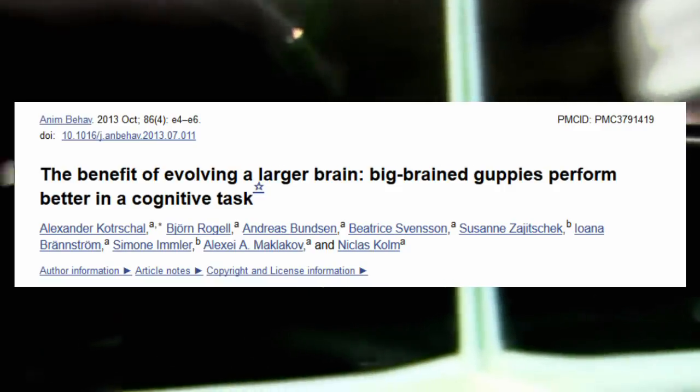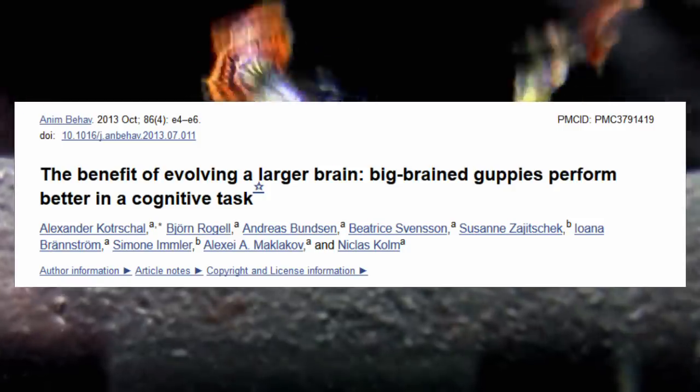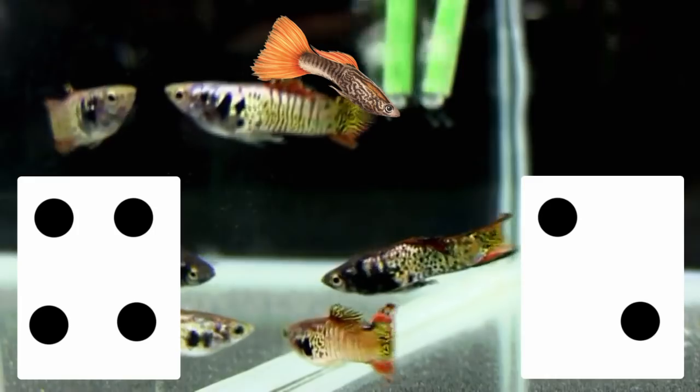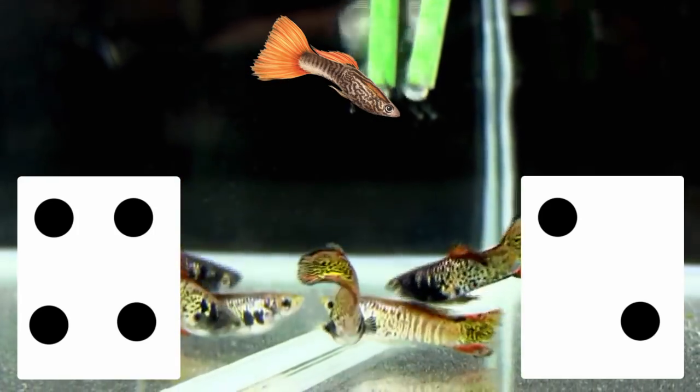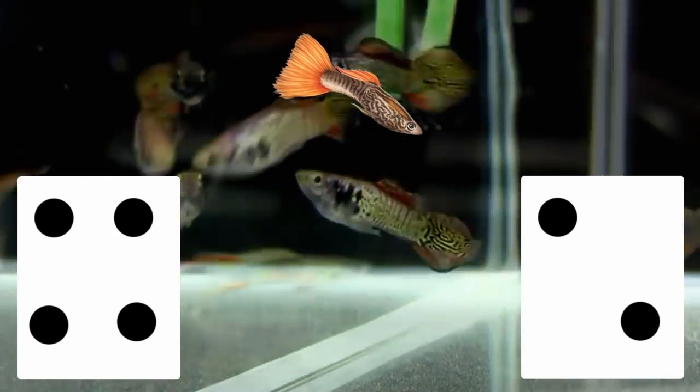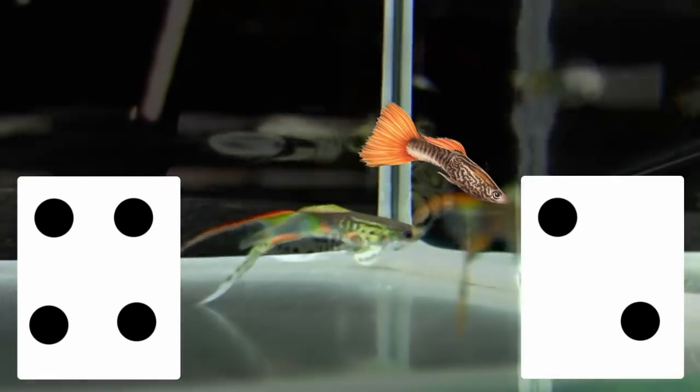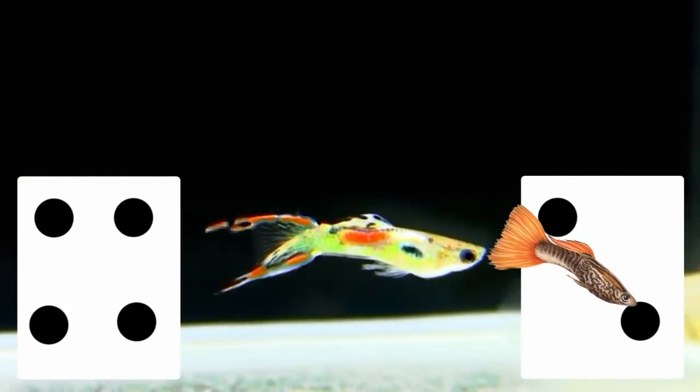The first study which we're going to be looking at was basically a very simple cognitive test. A card with either two symbols or four symbols was shown to the fish on one side of their tank. One of these was associated with a food reward and the other not. Rather unsurprisingly, over time, some of the fish would learn that this card with this number of symbols on it signified that food was about to happen.